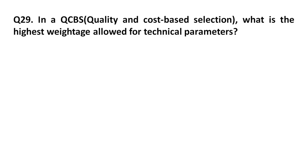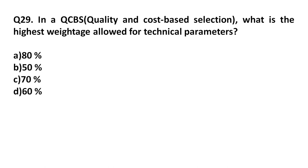Question 29: In QCBS (Quality and Cost-Based Selection), what is the highest weightage allowed for the technical parameter? Option A: 80 percent. Option B: 50 percent. Option C: 70 percent. Option D: 60 percent.